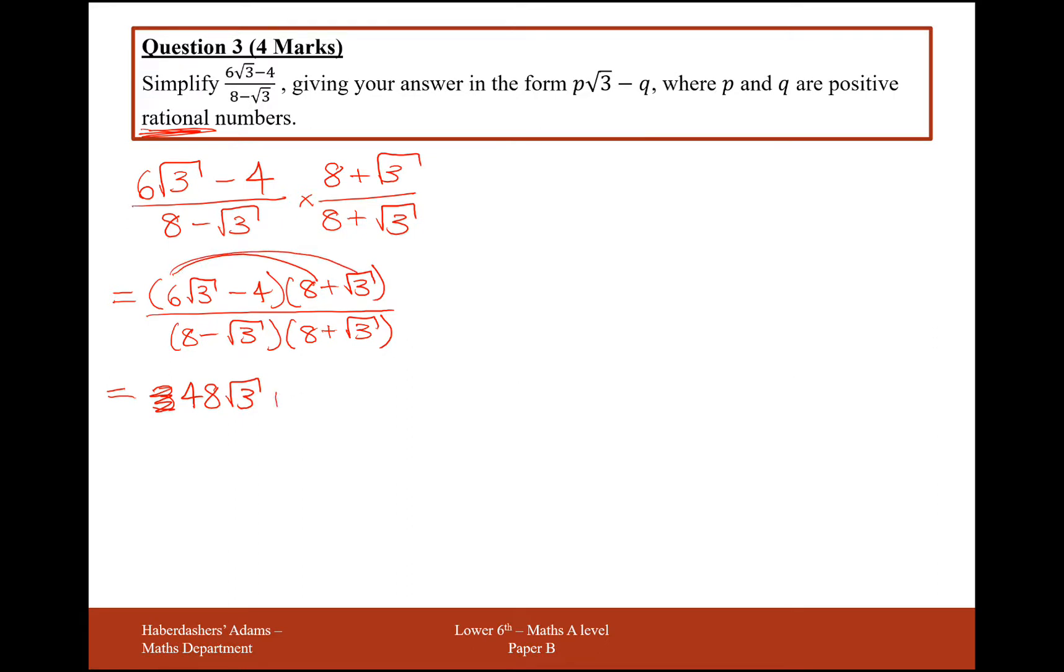6 root 3 times root 3, that would be 6 times 3, which is 18. Minus 4 times 8 is minus 32, and minus 4 root 3.